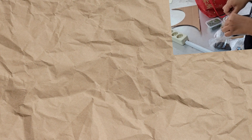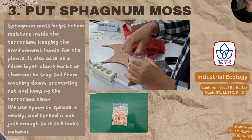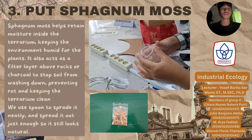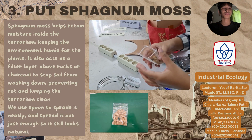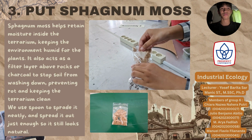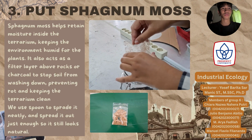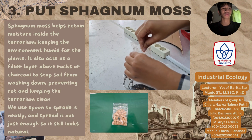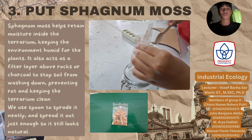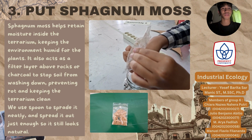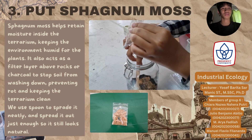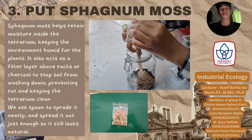Next is sphagnum moss. Sphagnum moss is used to hold moisture and keep the terrarium humid. It's placed on top of the rocks and charcoal to stop the soil from falling down. We use tweezers to place it neatly and spread it out just enough so it looks natural.